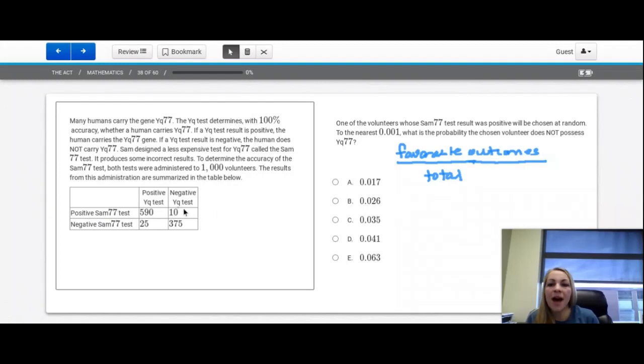So 590 plus 10 will get us that total. So that will be 600 on the bottom. And what is the probability that the volunteer does not possess the YQ77? Well, that's this 10, because this matched in the last problem. So we're going to be using this 10 value. If we take this into a calculator, we get 0.016 repeating. So if we round up, because we'll have 66666, we get 0.017.